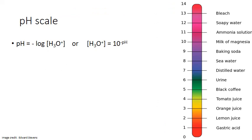pH values are based on the concentration of hydronium, or H3O+ ions, in solution. The formula for pH is the negative log — log meaning to the base 10 — of the hydronium ion concentration. The negative log function allows us a way to represent the relative power of 10 for each concentration. This is not a linear scale; it is a logarithmic scale, and each number represents a whole power of 10 difference from the number above or below it.